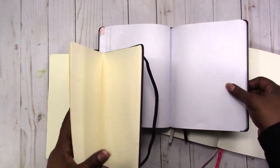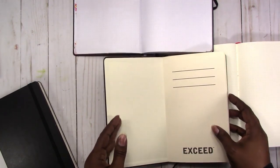Again, it's dot grid. No numbered pages. Has this place for your name in the front, but it does not have an index in the front. So it's just a basic plain journal.